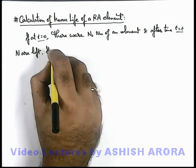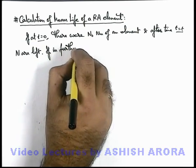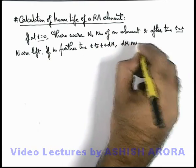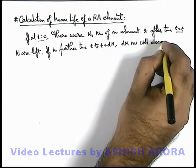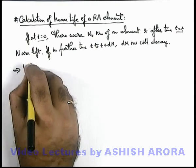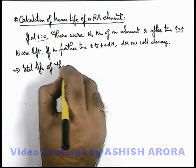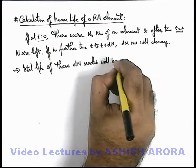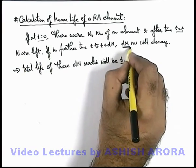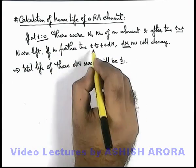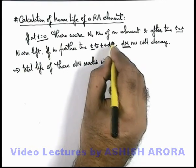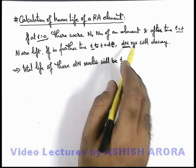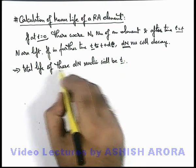If in further time t to t plus dt, dN nuclei will decay, then the total life of these dN nuclei will be taken as t, because these dN nuclei were in existence as parent nuclei from t equal to zero to t. From time t to t plus dt these dN nuclei decay, so these dN nuclei will last from zero to t.